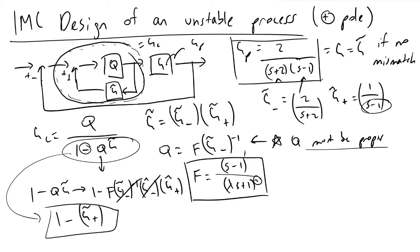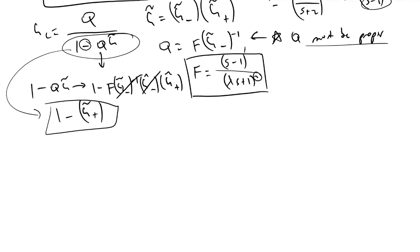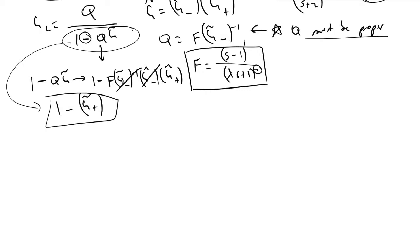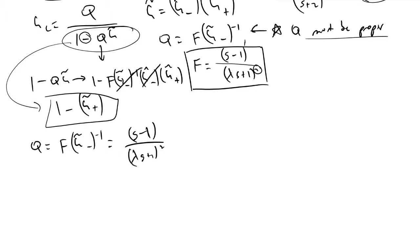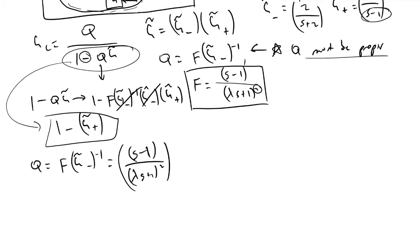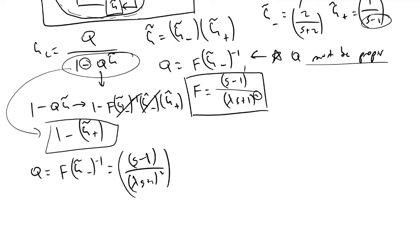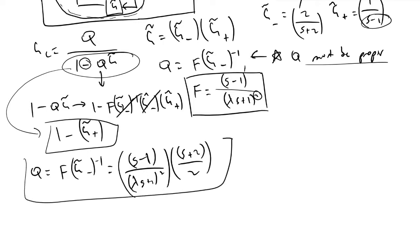The first thing I'm going to do moving forward is evaluate what Q is. Q was equal to our filter F times (G̃⁻)⁻¹. Plugging in, we have F equal to (S-1) over (λS+1)² and (G̃⁻)⁻¹ equal to (S+2) over 2. So Q equals (S-1)(S+2) divided by 2(λS+1)².